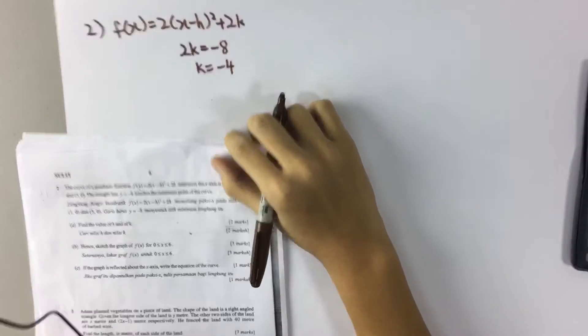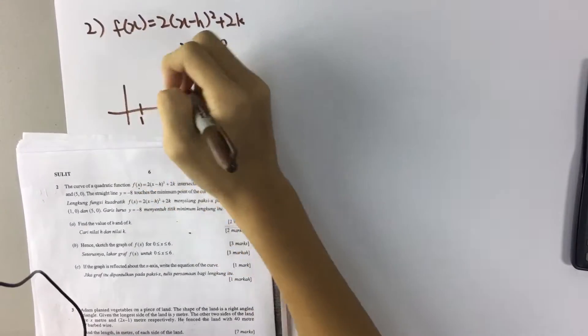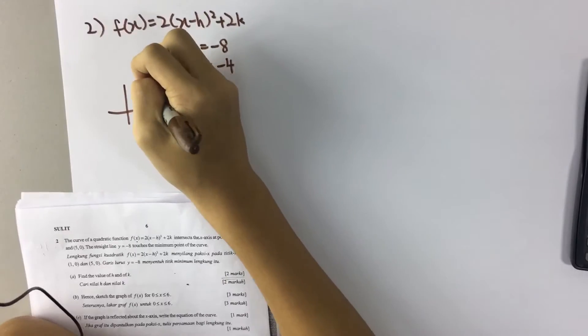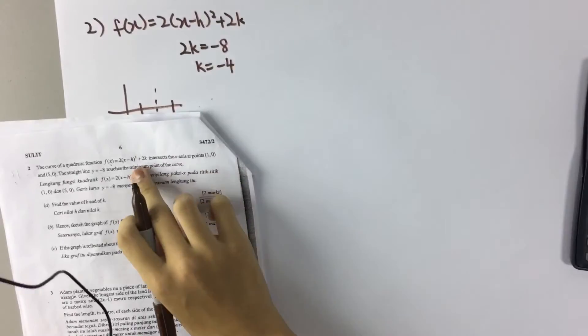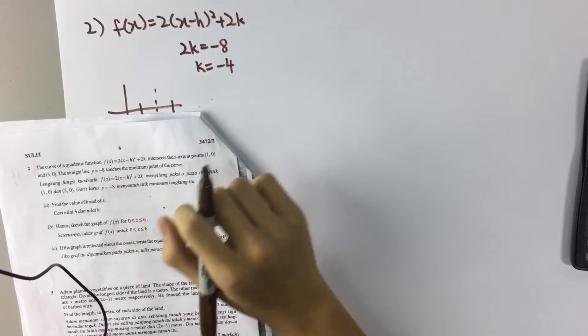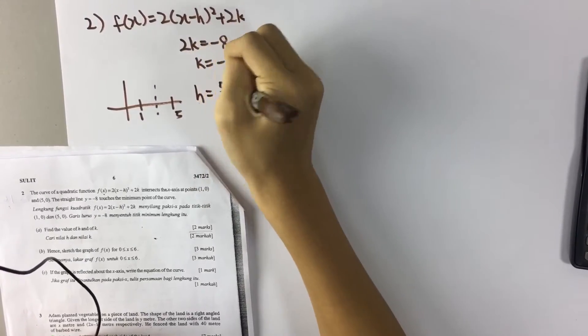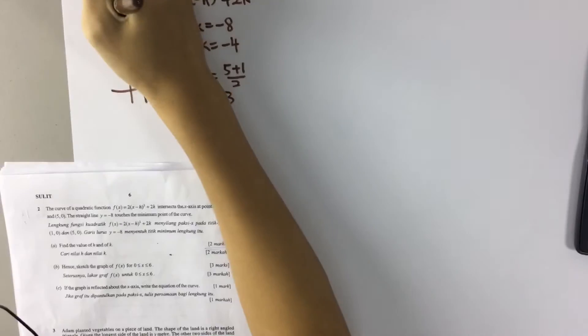To find h, we know that in a graph when one point is equal to 1 and another point is equal to 5, the axis of symmetry is the midpoint of these two values. So h is also the value of axis of symmetry. So h is equal to (5 plus 1) divided by 2. So h is 3. This is part A.